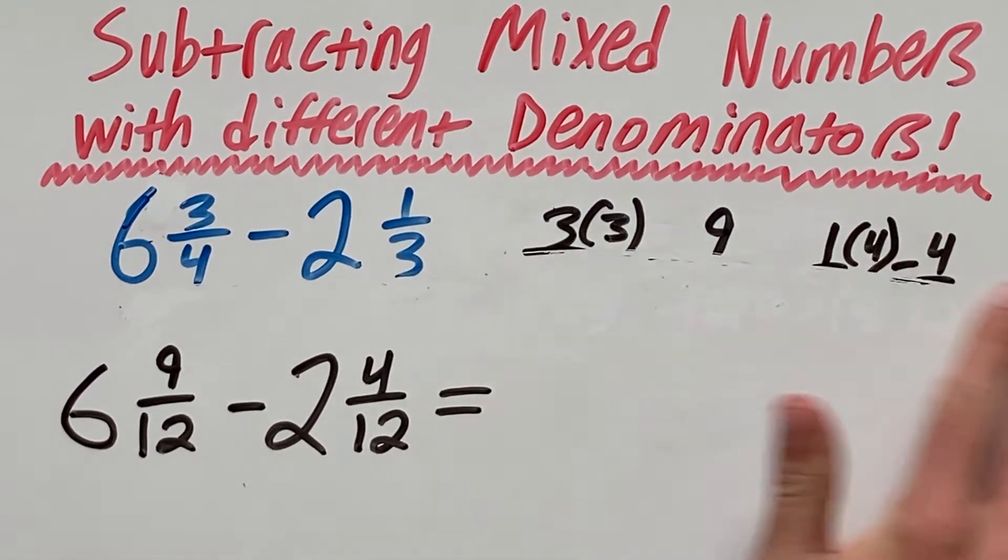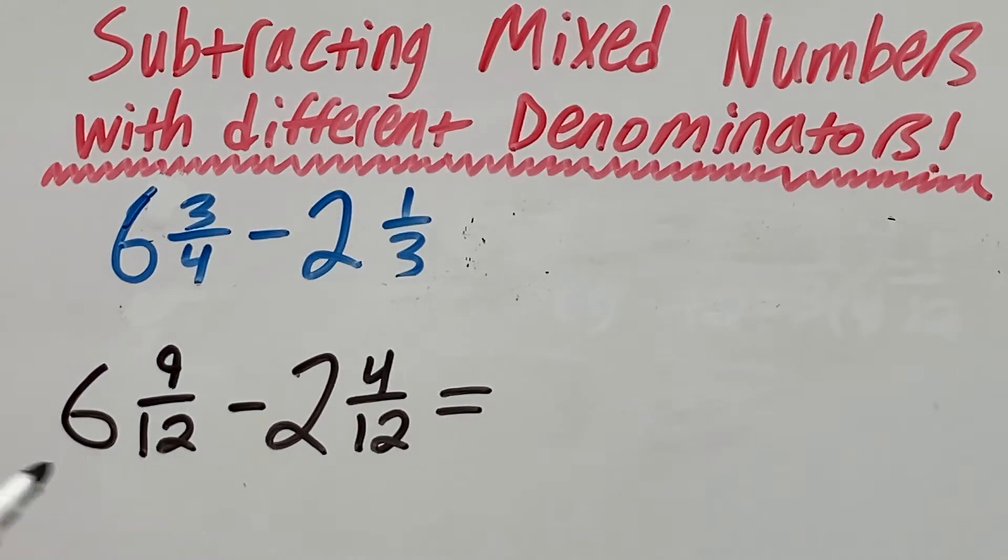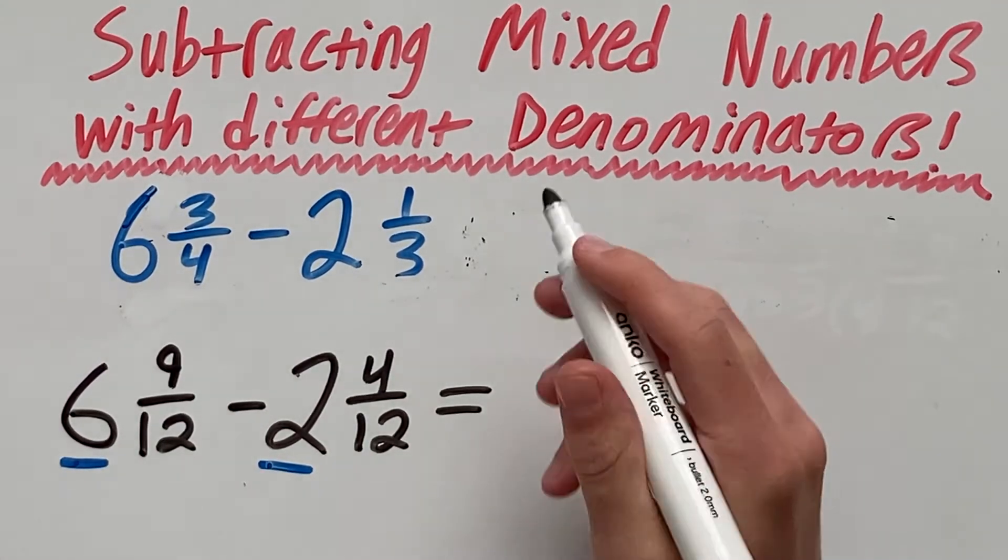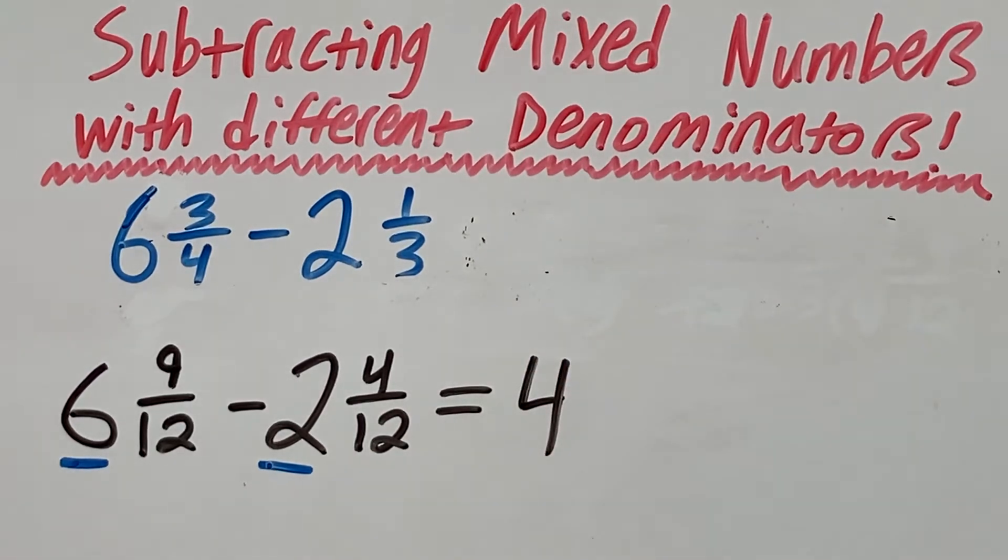Now that we have this new problem, we can solve. First, we want to subtract our whole numbers out the front. So 6 minus 2. 6 minus 2 is 4. So our whole number out the front of our answer will be 4.